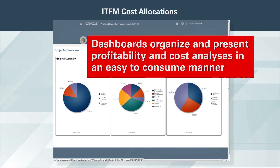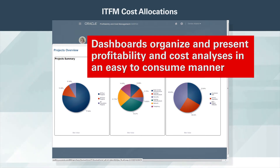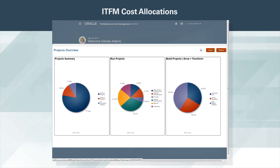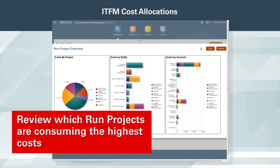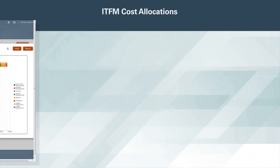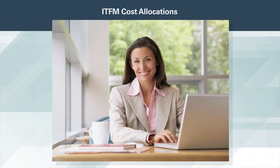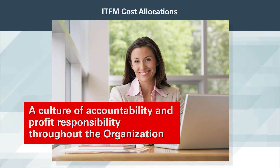On a more summary level, embedded analytics such as dashboards organize and present profitability and cost analyses in an easy-to-consume manner. Let's review the projects overview dashboard for a quick breakdown of run versus build project costs. In the run project overview, we can review which run projects are consuming the highest costs, as well as the department and accounts the costs are being allocated from. PCMCS models financial and operational data to provide IT management and line of business leaders strategic multi-dimensional analyses for promoting a culture of accountability and profit responsibility throughout the organization.